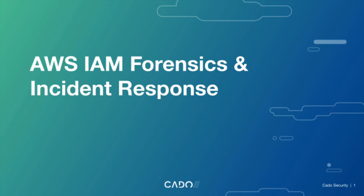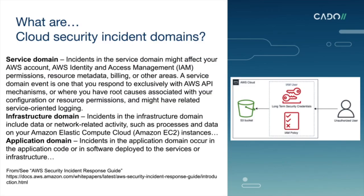First off, what are some of the cloud security incident domains? There's a great white paper from AWS — the Incident Response Guide — and they go through the three core incident domains you might encounter. The first one, which we're going to talk about today, is the service domain. That includes things like AWS IAM, metadata, resources, and billing. After that is the infrastructure domain — more things like what's actually inside the servers, so a bit more traditional incident response forensics. And then there's the application domain, covering your actual software and the code within it, which we won't really touch on today.